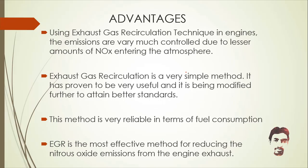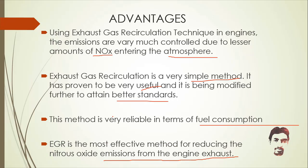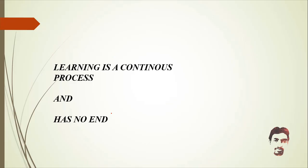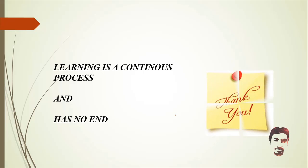Advantages of using exhaust gas recirculation: emissions are very much controlled due to the lesser amount of NOx entering the atmosphere. It is a simple and proven method that is being continuously modified to attain better standards. The method is very reliable in terms of fuel consumption, and EGR is the most effective method for reducing nitrous oxide emissions from engine exhaust. A disadvantage is that the overall efficiency of the engine is reduced when EGR is used.